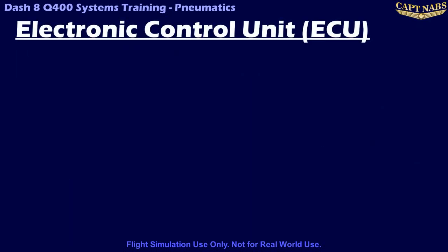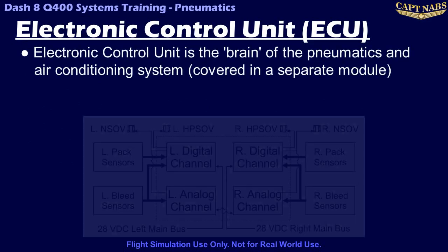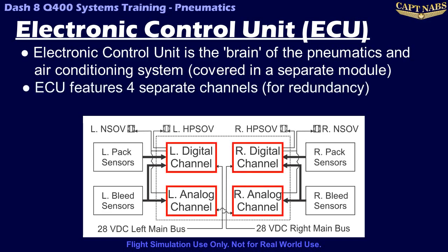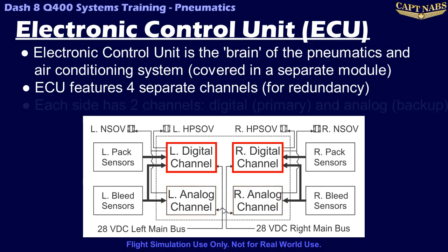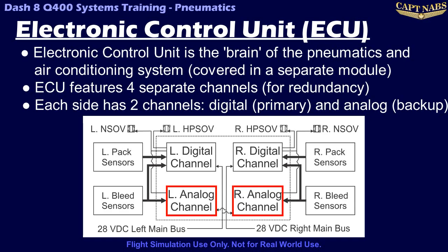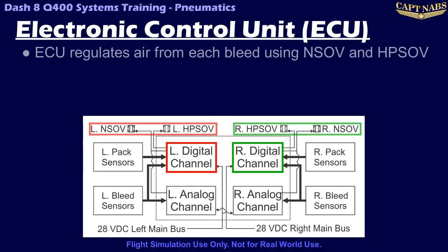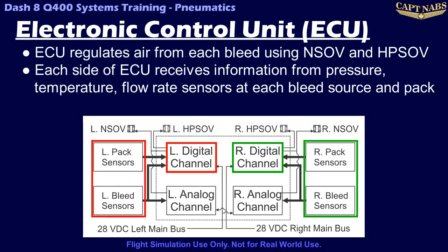The electronic control unit or ECU is the brain of the entire pneumatics system and also controls the functioning of the air conditioning system, which will be described in a separate module. For redundancy, the ECU has four separate channels divided into left and right channels. Each side monitors and controls the bleed system for its corresponding engine. On each side of the ECU are two channels: a primary digital channel and a backup analog channel. Normally, both digital channels control their respective engine's valves to maintain appropriate air pressure, flow rate, and temperature from the engine. A series of sensors monitor all of these parameters.